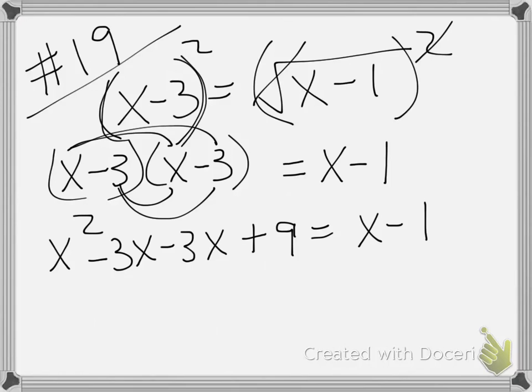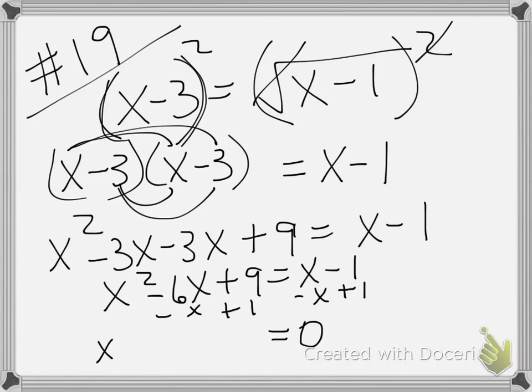So now I have x squared minus 3x minus 3x plus 9 equals x minus 1. Any time you have x squared and x in the same problem you need to get everything to the same side. So first I'm going to simplify this. x squared minus 6x plus 9. Then I'm going to subtract x from both sides and add 1 to both sides so that my right side is 0. So now I have x squared minus 7x plus 10.